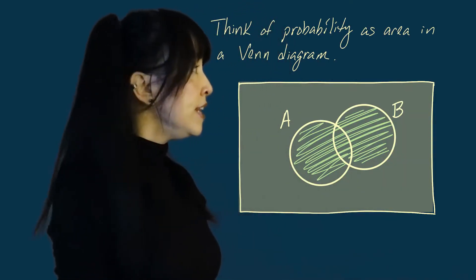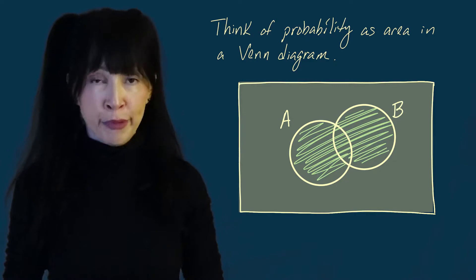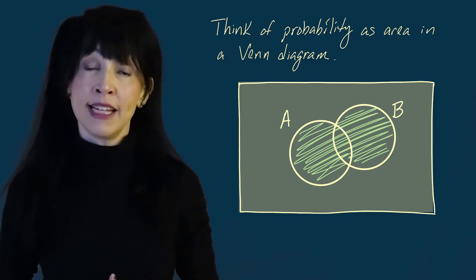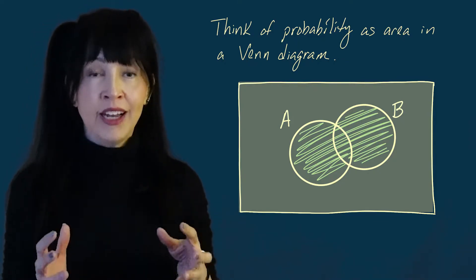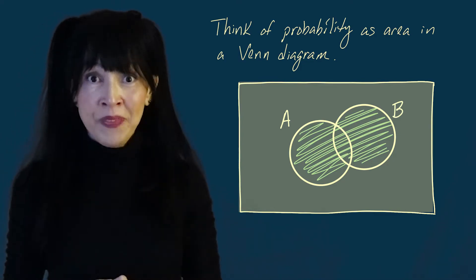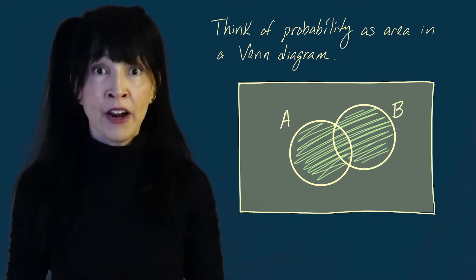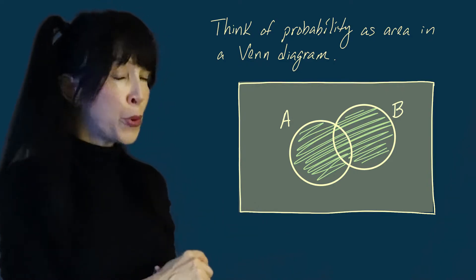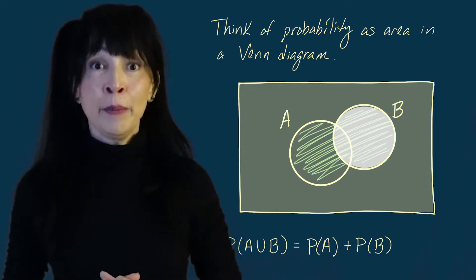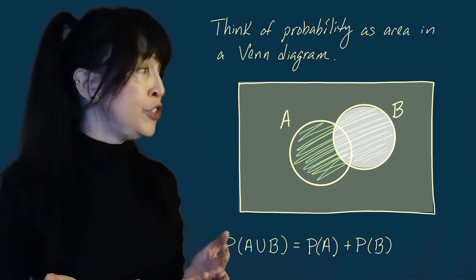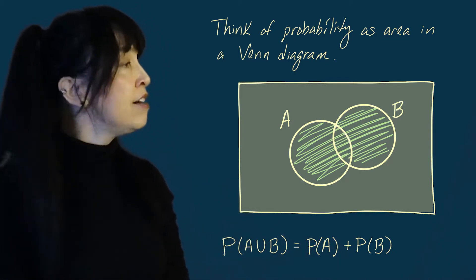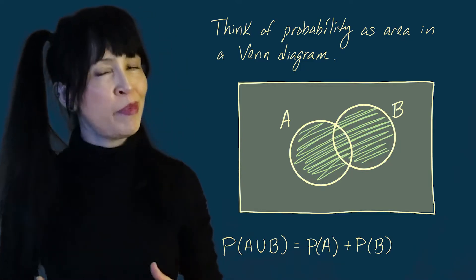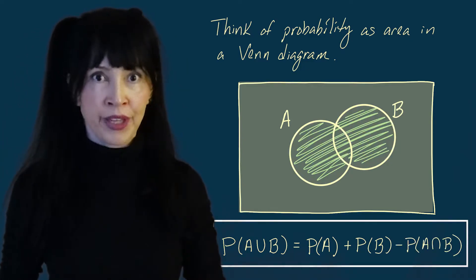If I want the probability of seeing A union B occur, I can compute this shaded area in multiple ways. One way is to take the total area in A plus the total area in B, and then subtract the intersection since I've double-counted it. This gives us our first rule of probability: the probability of A union B equals the probability of A plus the probability of B minus the probability of the intersection.